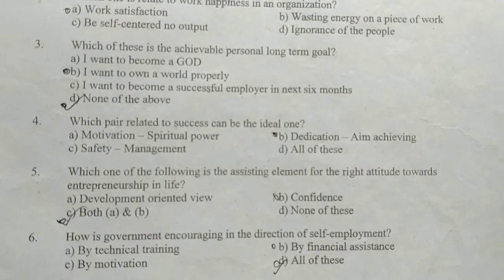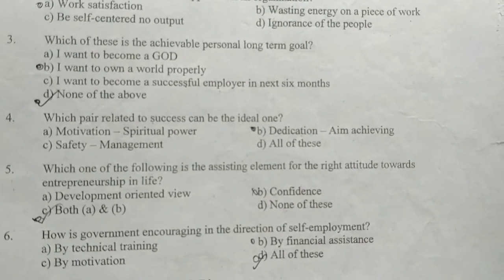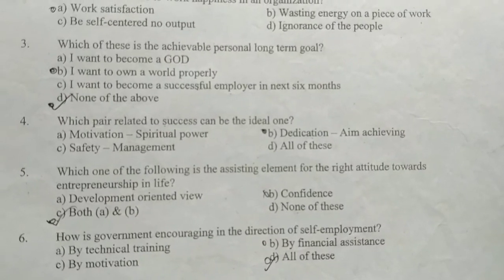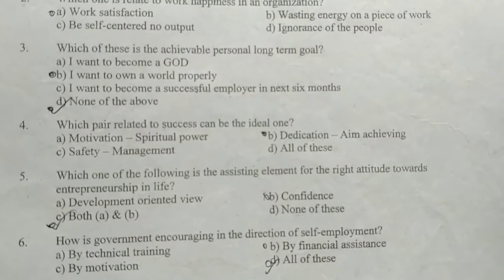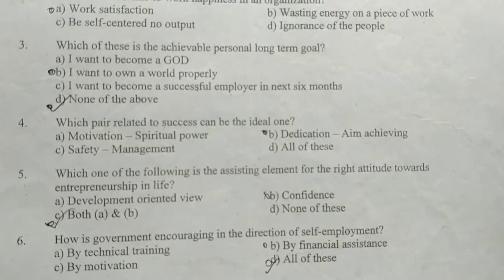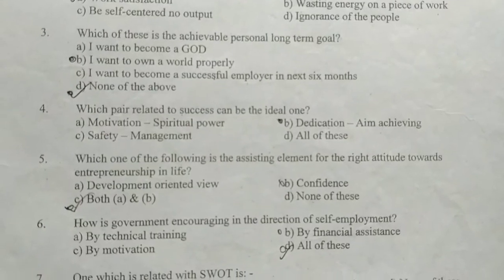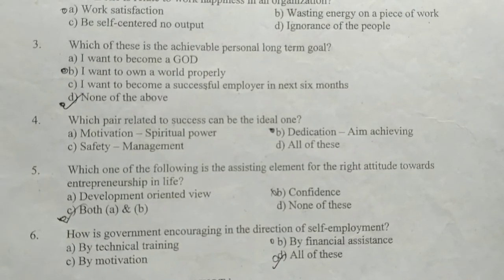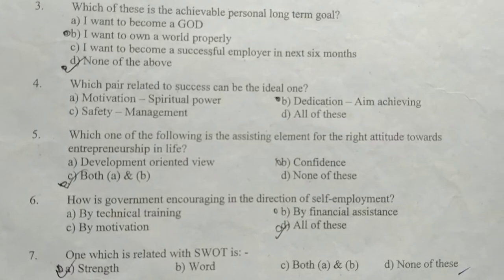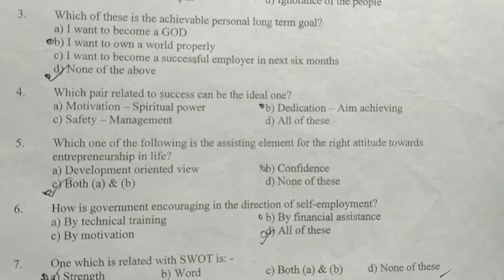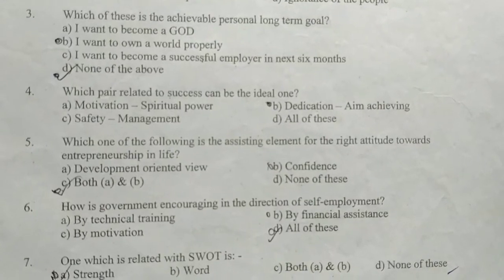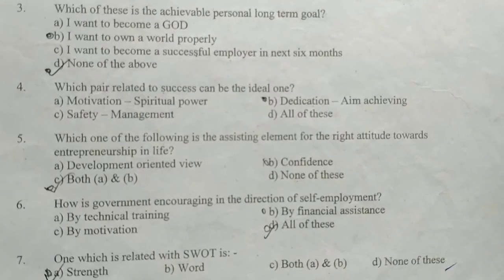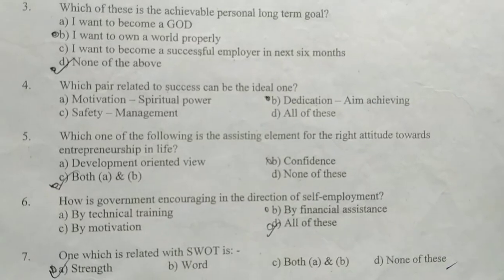Which one of the following is the assisting element for the right attitude towards entrepreneurship in life? How is the government encouraging self-employment? Options: by technical training, by financial assistance, by motivation, and all of this is the right answer.